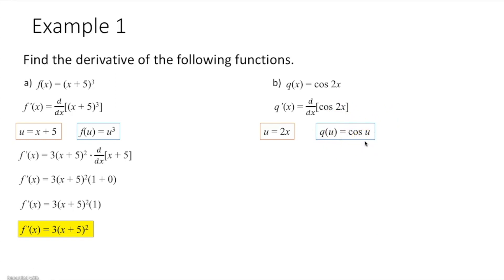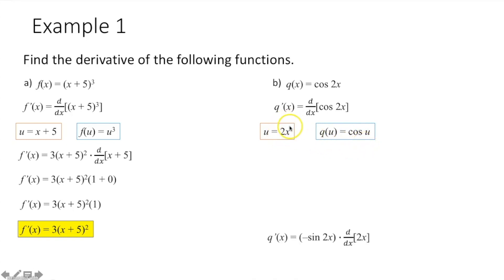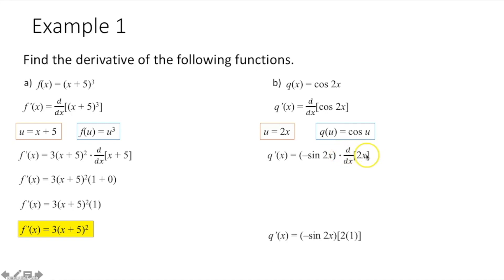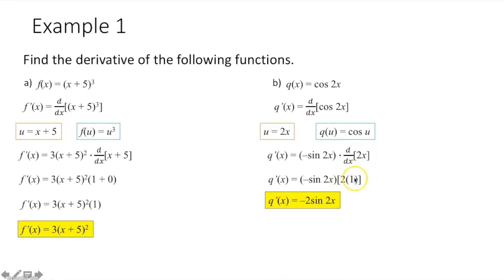The way the chain rule works, we take the derivative of our outermost function, which is cosine of u. The derivative of this would be negative sine of u, and remember u is 2x, so it would be negative sine of 2x times the derivative of our innermost function, 2x. We take the derivative of 2x: the 2 comes out front using the constant multiple rule, and the derivative of x is 1, so 2 times 1 gives you 2. Multiply that 2 by the negative 1 out front, and I get my derivative as negative 2 sine of 2x.